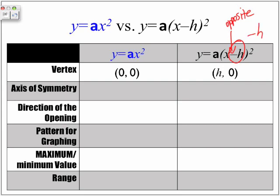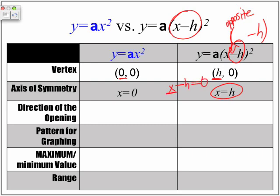Whenever we have a negative h in the brackets, the vertex x value is positive. For the axis of symmetry, here's the trick: take what's in the brackets — this x minus h — and make it equal to 0. Solve for x. We have x minus h equals 0; move the negative h to the opposite side, the sign changes, so x is equal to h. That's how we get our axis of symmetry.